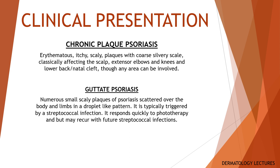Guttate psoriasis presents as numerous small scaly plaques of psoriasis scattered over the body and limbs in a droplet-like pattern. It is typically triggered by a streptococcal infection. Guttate psoriasis can be self-limiting but develops into chronic plaque psoriasis in approximately a third of individuals. It responds quickly to phototherapy but may recur with future streptococcal infections.